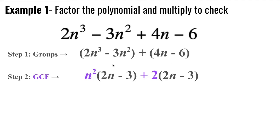n squared, factored out, leaves me with 2n minus three. And when I factor out a positive two in the second binomial, I'm left with 2n minus three.